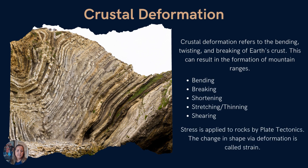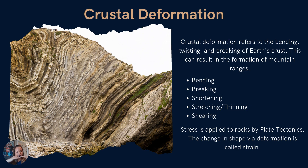So what is crustal deformation? Crustal deformation is when the earth's crust — the rocks that make up the crust — are broken, bent, shortened, stretched, or sheared. In plate tectonics, stress is constantly being applied to rocks. When stress is applied, rocks have to accommodate that stress, and we call that accommodation strain. They change some sort of shape during deformation. As you can see in this image, these rock layers are no longer parallel or horizontal — they are now folded and bent to accommodate the stress they've been exposed to.